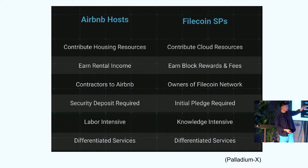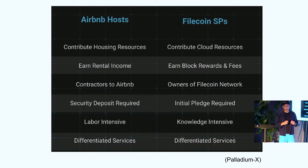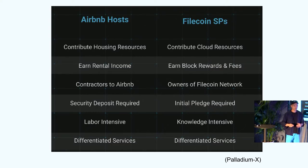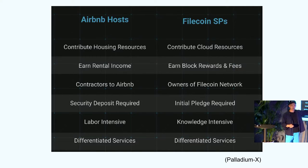Here's a comparison: becoming a Filecoin storage provider is a lot like an Airbnb host. You contribute your resources, you earn some kind of income. But the difference is you are like an owner of the network by being a Filecoin storage provider, because you earn the token of the system — instead of just being a contractor. There's also the initial pledge required, just like you need to acquire homes to become an Airbnb host. But there are many other services also emerging, such as providers that supply the capital while the storage provider just operates it. Both Airbnb hosts and Filecoin SPs are competing on differentiated services and brand, while sharing a common identity of being in the Filecoin network.